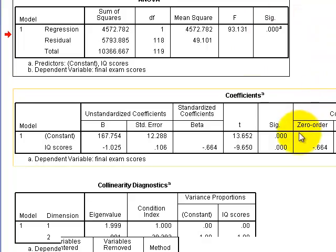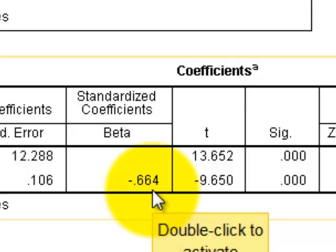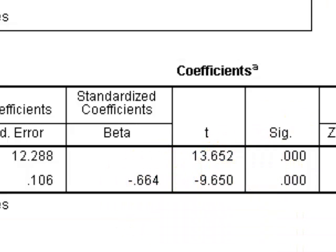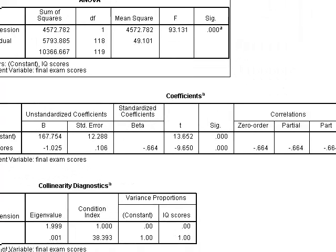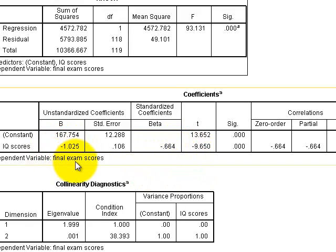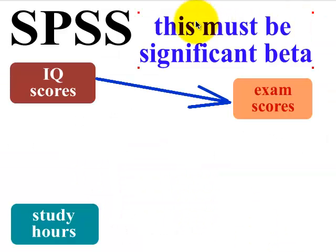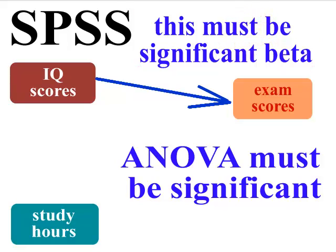The last thing we're going to look at is our beta weight — it's pretty big and it is significant. So the beta weight between IQ scores and exam scores is significant and large. We've got the first step out of the way: we have a significant beta weight between the predictor and the DV, and the ANOVA was significant. The stage is set.